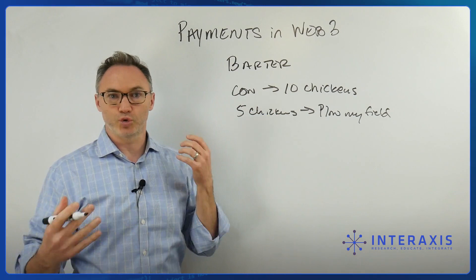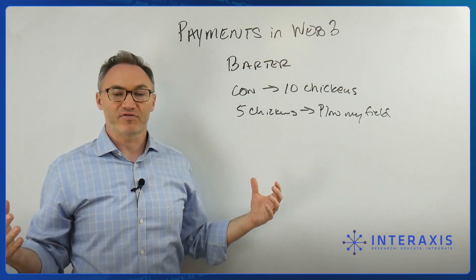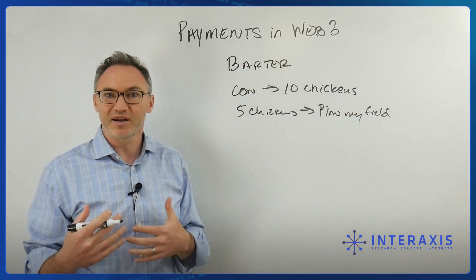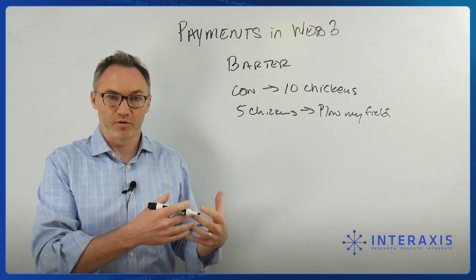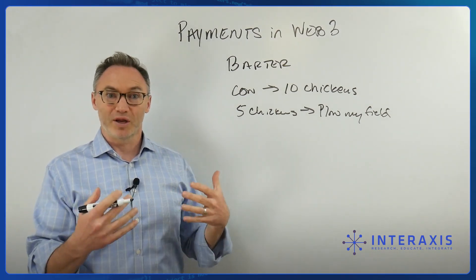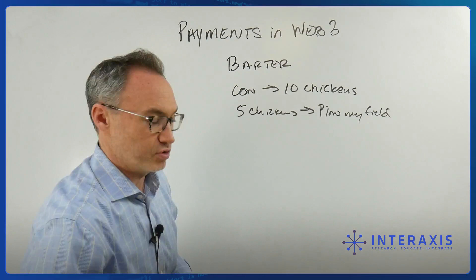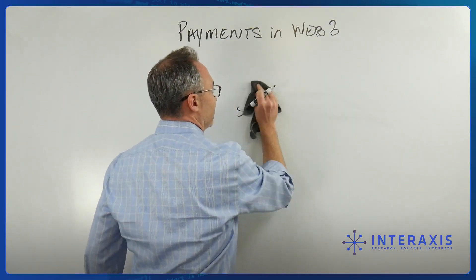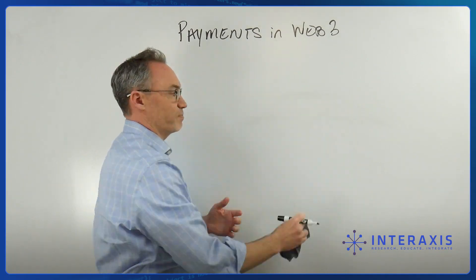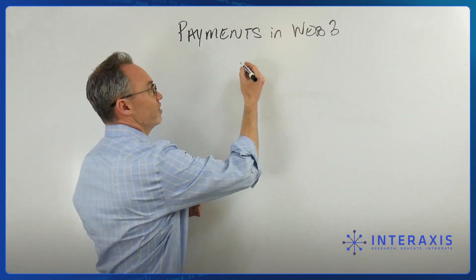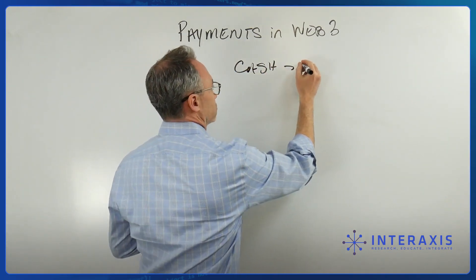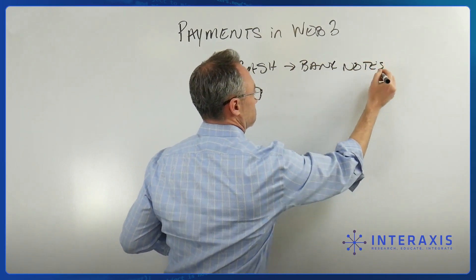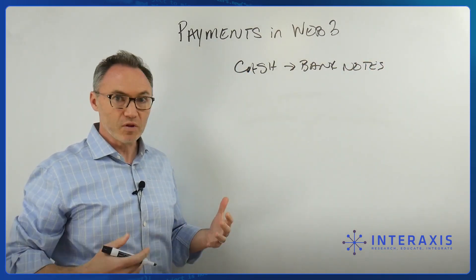As soon as you start branching out beyond your community, you have to have some system that allows you to transact with others who aren't part of your community. A big step that got us here — to cash, also known as banknotes — was a huge change in technology. Of course, you had coins minted early on — Greek, Roman, Egyptian — but banknotes were particularly important around the time of the Renaissance.